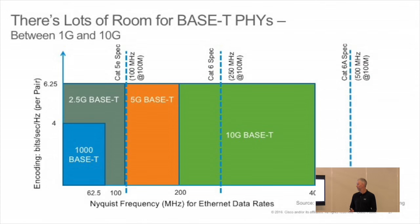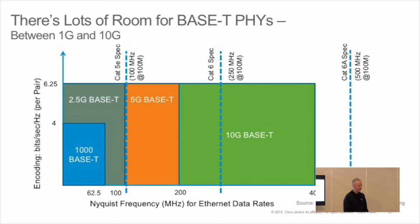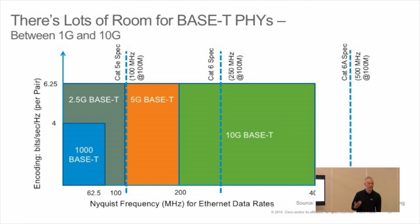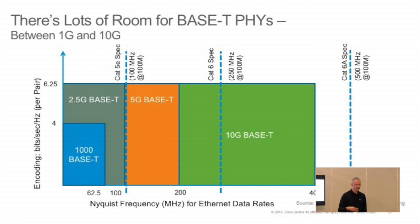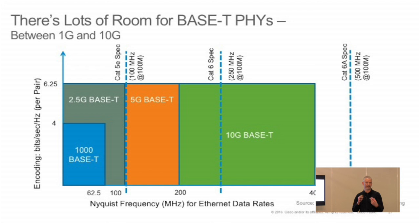Some key points: 1000Base-T sits at about 62.5 MHz, nicely inside the 100 MHz of Cat5e. 10GBase-T needs about 400 MHz, nicely inside the 500 MHz of Cat6A. What we're fundamentally doing as part of the standard is sliding 2.5G down inside the Cat5e spec, and sliding 5G down at about the Cat6 range. There's lots of interesting work in signal correction — there are boatloads of DSPs in these PHYs actually getting signal over a really noisy link.